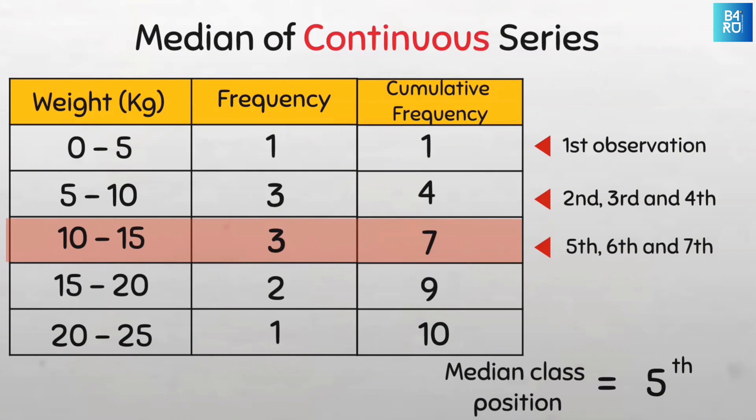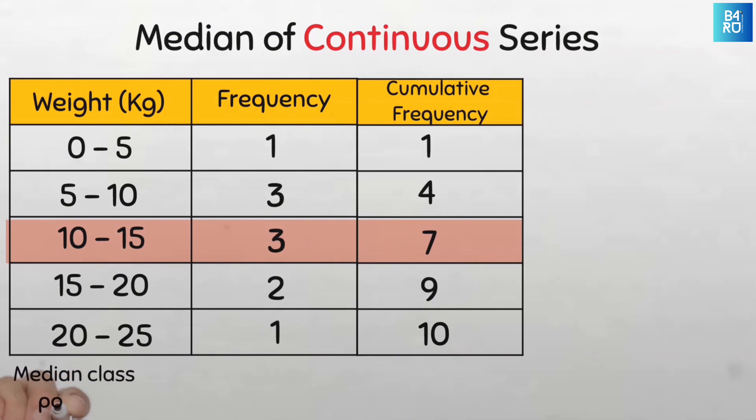Now we know our number of values should be 10 and the median class position to be the fifth position. Now we know the median class to be the 10 to 15 kg class. Now let's go ahead and find the median value.